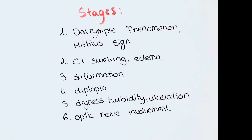Stage 6, the most severe stage, includes involvement of the optic nerve, which leads to progressive blindness.